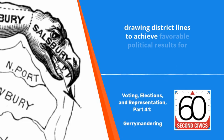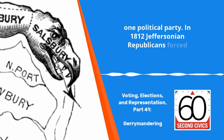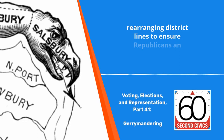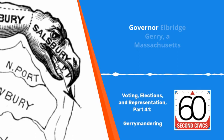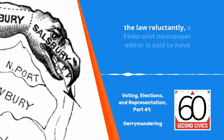In 1812, Jeffersonian Republicans forced through the Massachusetts legislature a bill rearranging district lines to ensure Republicans an advantage in the upcoming senatorial elections. Although Governor Elbridge Gerry, a Massachusetts delegate to the Philadelphia Convention, signed the law reluctantly,